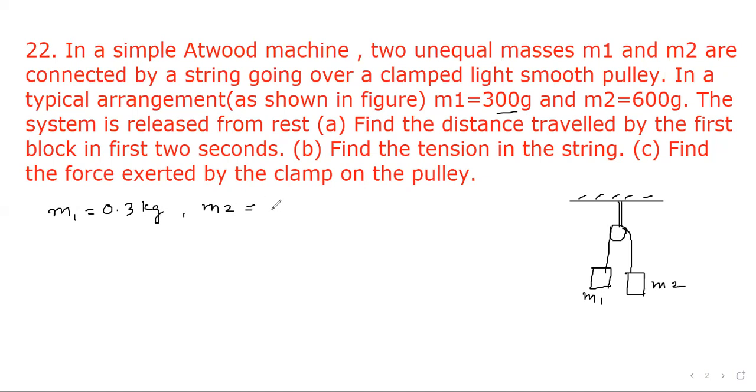M2 is equal to 0.6 kg. Now consider free body diagram of mass m1, so here there is block m1 and tension T is upward, its weight m1 g in downward direction, and it is moving with acceleration a in upward direction. So we can write the equation, it will be T minus m1 g equal to m1 a, or T equal to m1 g plus m1 a.